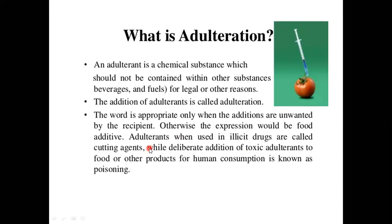Suppose it is unwanted, in that condition we call it an adulterant. Adulterants when used in illicit drugs are called cutting agents. While deliberate addition of toxic adulterants to food or other products for human consumption is known as poisoning. So these are different terms related to the addition of a chemical substance other than the main food product.